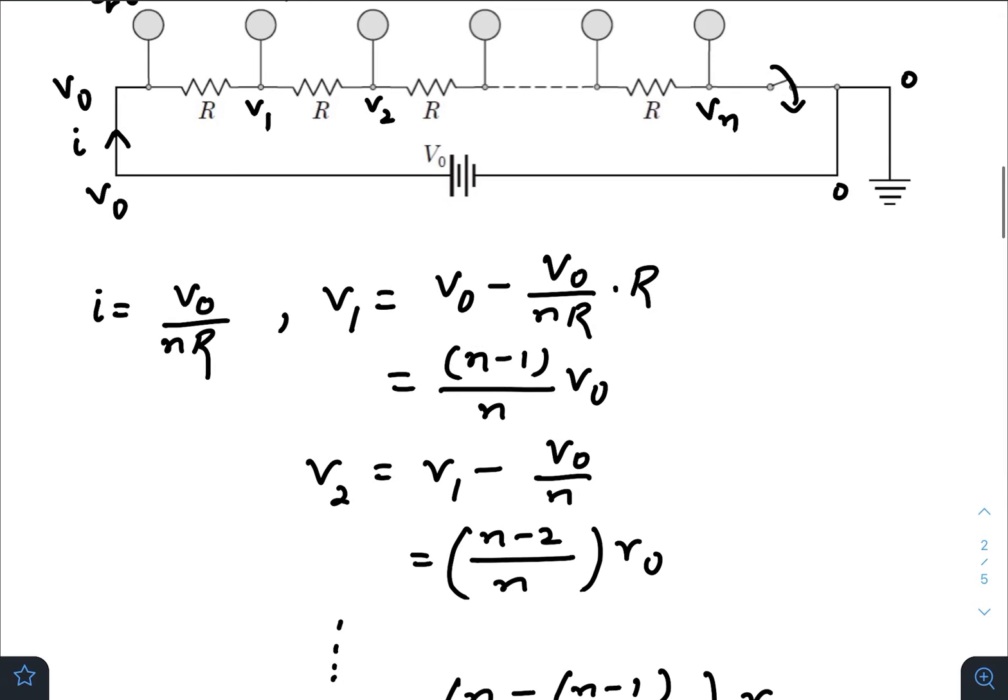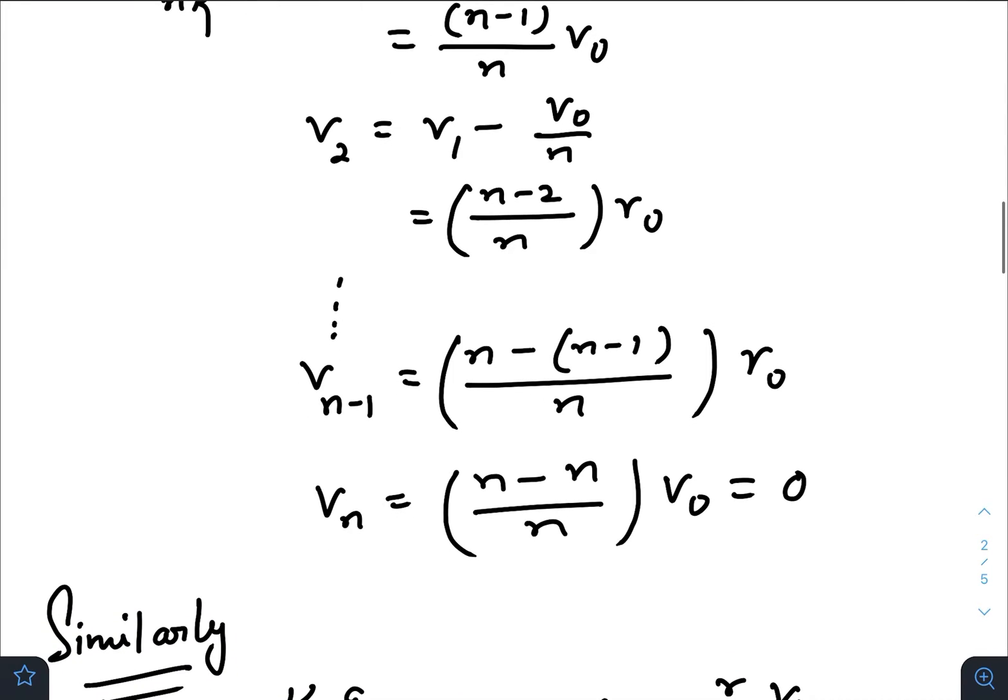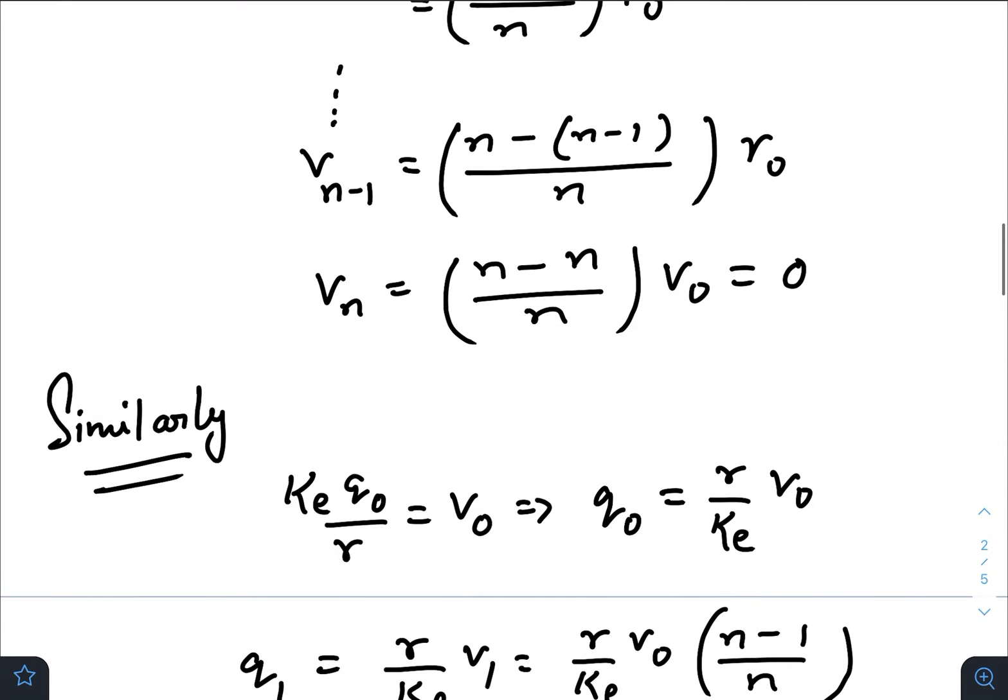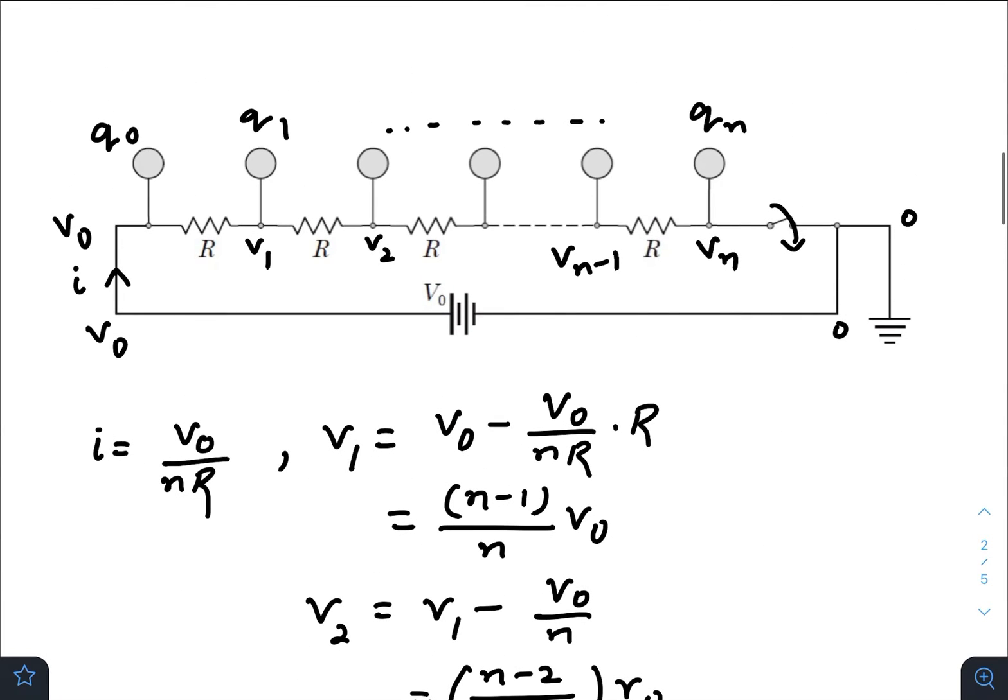Similarly, V₂ will be V₁ minus V₀/n. Similarly, we will reach till the last point, and this point would be at potential V_{n-1}. So V_{n-1} would look like this.